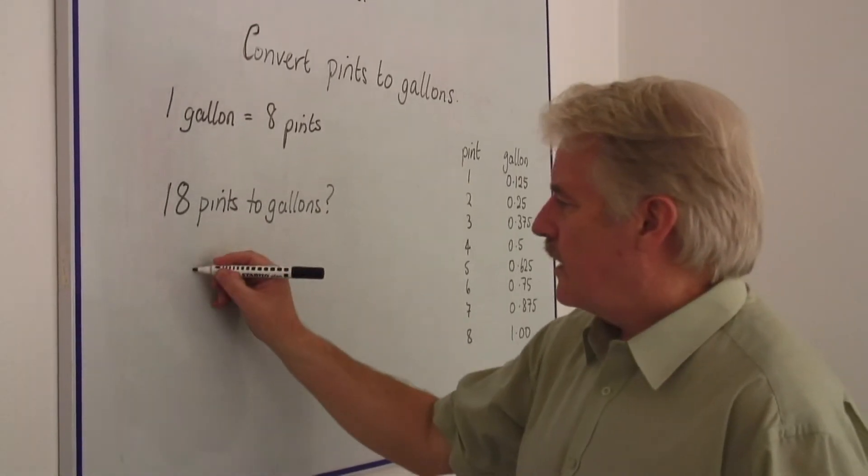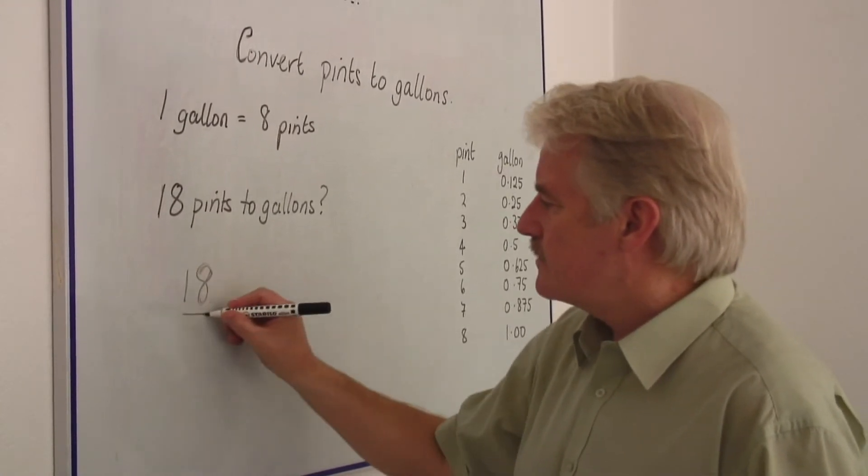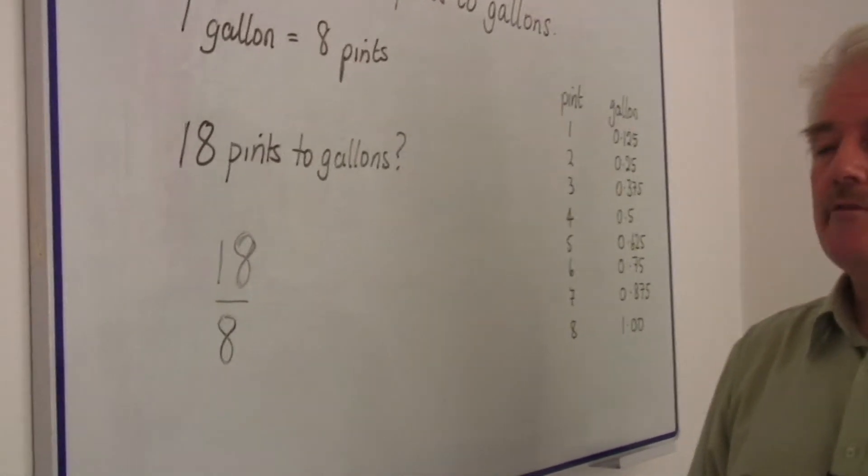Well, as I said, 18 pints. Let's divide it by eight. This will give us immediately the amount in gallons.